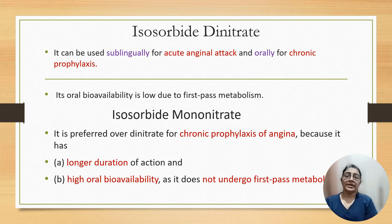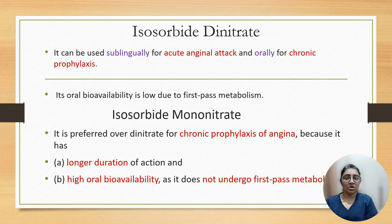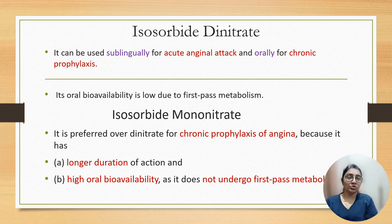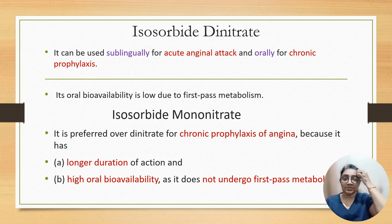Isosorbide dinitrate is used for acute attacks of angina by the sublingual route and for prophylaxis by the oral route, though its bioavailability is low due to high first-pass metabolism. Isosorbide mononitrate is used for chronic management because it has a longer duration of action, higher oral bioavailability, and does not undergo first-pass metabolism.